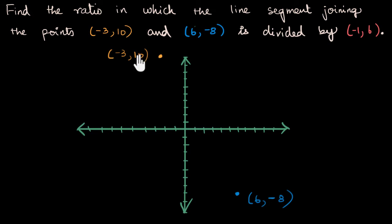So now what do I want? What is the line segment joining these two? I can just draw that line segment. That's a straight line. That's the line segment joining the two of them. Now what do I need to do? (-1, 6). Where is that going to be?